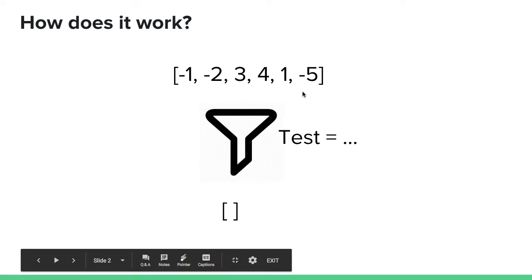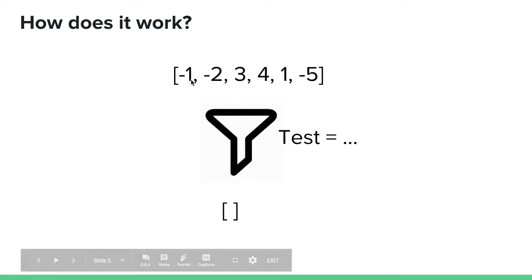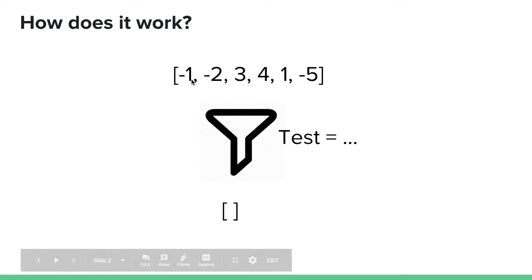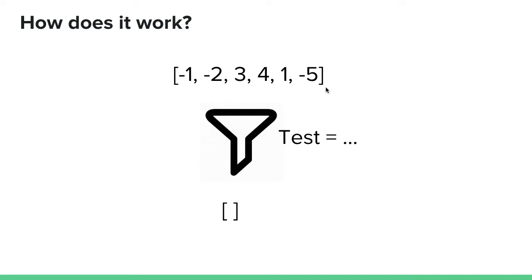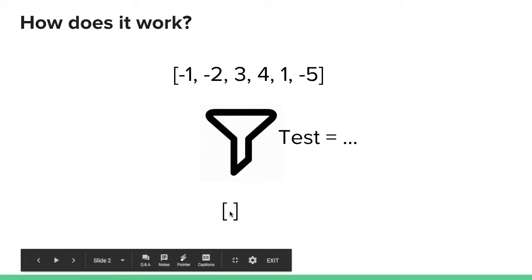So you've got an array of numbers here, and what you want to do is filter them and return a new array. The test I've left blank at the moment, but say you wanted to return a new array of positive numbers — what you'd want to do is have a test that checks whether each element is a positive number or not. So it would take the first element, run it through that test, and push it to the new array if it passes.